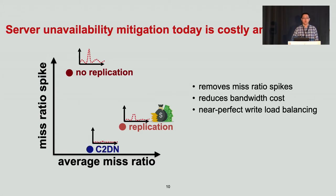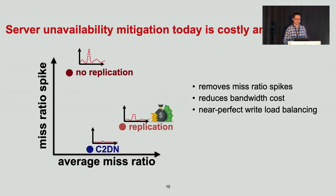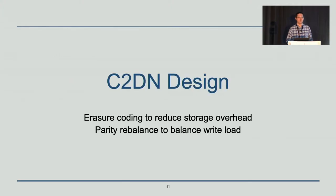So we are introducing C2DN, which stands for Coded CDN. It reduces the miss ratio spike as well as the average miss ratio, and achieves near-perfect write load balancing. Now let's see how we design C2DN to achieve this.